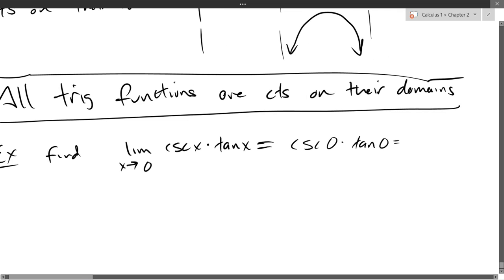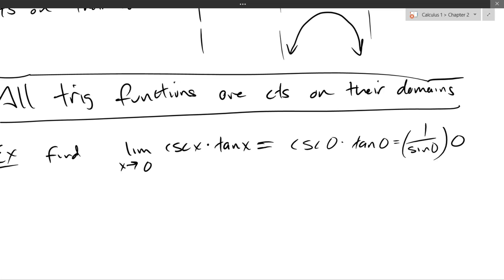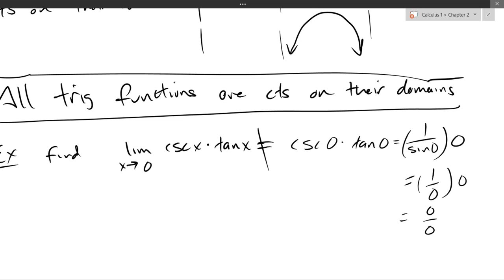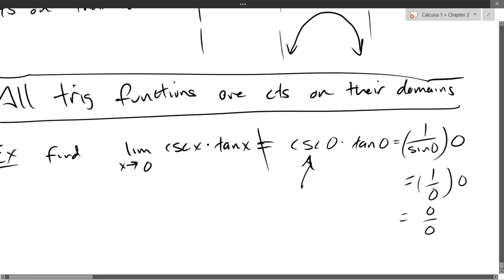What's tangent of zero? It's zero — tangent is fine. What about cosecant of zero? We can write it as 1 over sine of zero. What is sine of zero? Sine of zero is zero. So we get 1 over zero times zero, which is zero over zero — that means we have to do a little more work. We can't just plug in, because of the cosecant function. Cosecant is not continuous at x equals zero — we'd be dividing by zero.